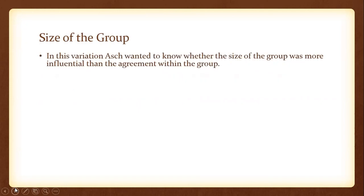One variable that he used was the size of the group. In this variation, Asch wanted to know whether the size of the group was more influential than the agreement within the group — literally, whether how many people made up the majority was more influential than whether the people within the majority group were in agreement with one another.